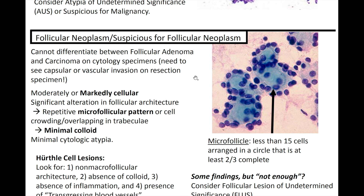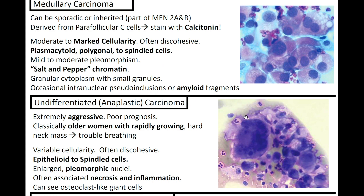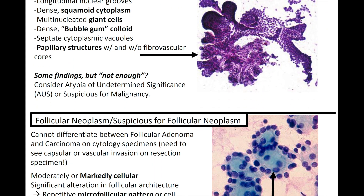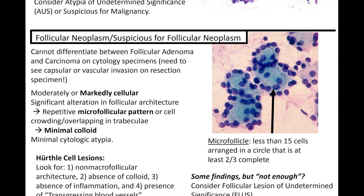Don't forget about Hürthle cell lesions. You're going to want to look out for non-macrofollicular architecture, absence of colloid, absence of inflammation, and presence of transgressing blood vessels. In this image on the right, you see microfollicles — each one has less than 15 cells arranged in a circle that is at least two-thirds complete, which is how we define a microfollicle. And if you have some findings but not quite enough, consider follicular lesion of undetermined significance, or FLUS.